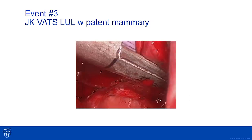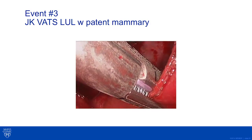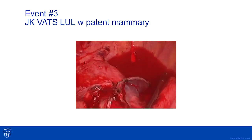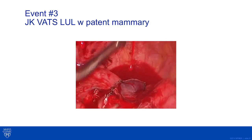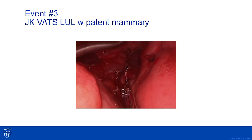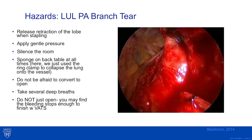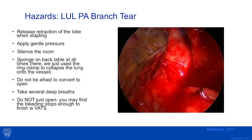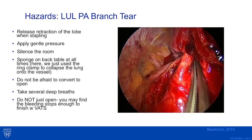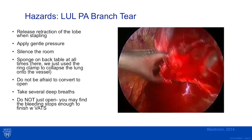The final stapler is fired, completely dividing the lung from all attachments. After suctioning residual blood, all staple lines from division of the pulmonary vein, pulmonary artery branches, and bronchus are visible. The pulmonary artery remains patent, and the stapled wedge of lung, densely adherent to the patent mammary, is left within the chest. Regarding left upper lobectomy in general, the most common area of injury is the first pulmonary artery branch. Dense lymph node adherence can make dissection difficult. Remember: release retraction of the lobe when stapling, apply gentle pressure, silence the room, fold the lung down onto the area of injury.